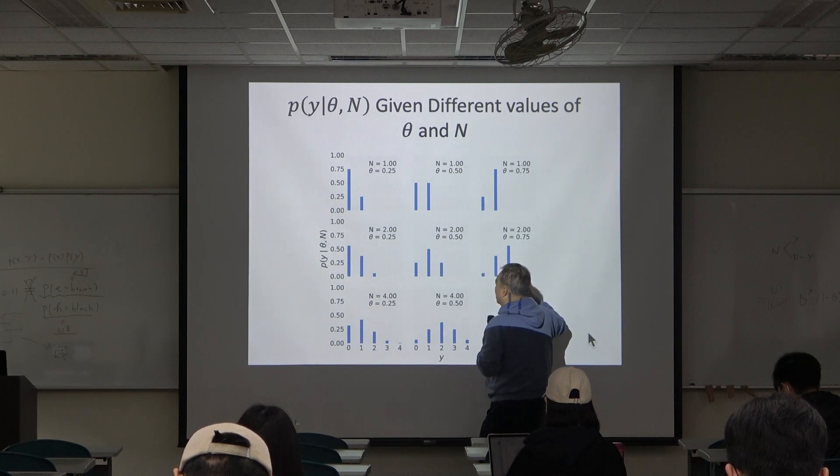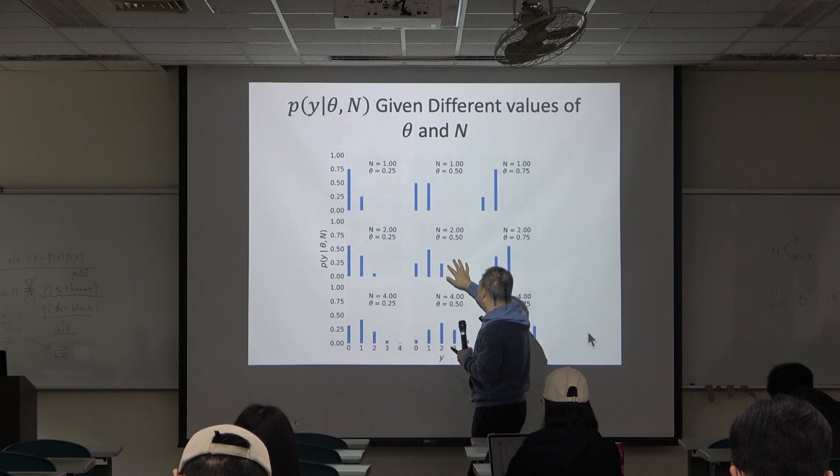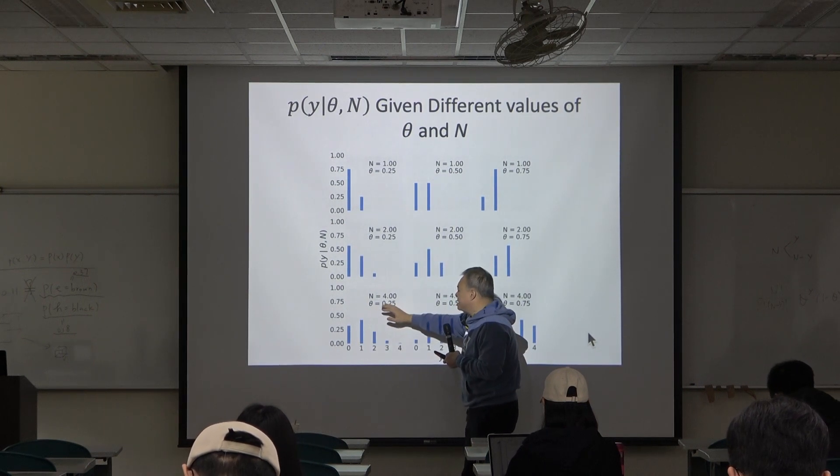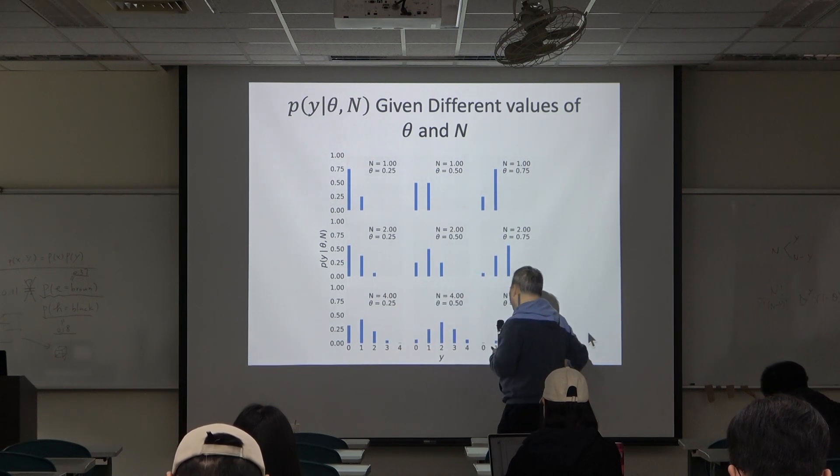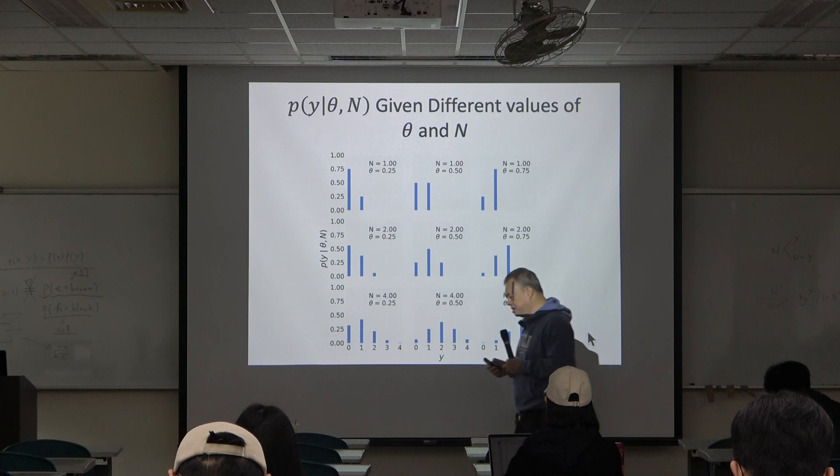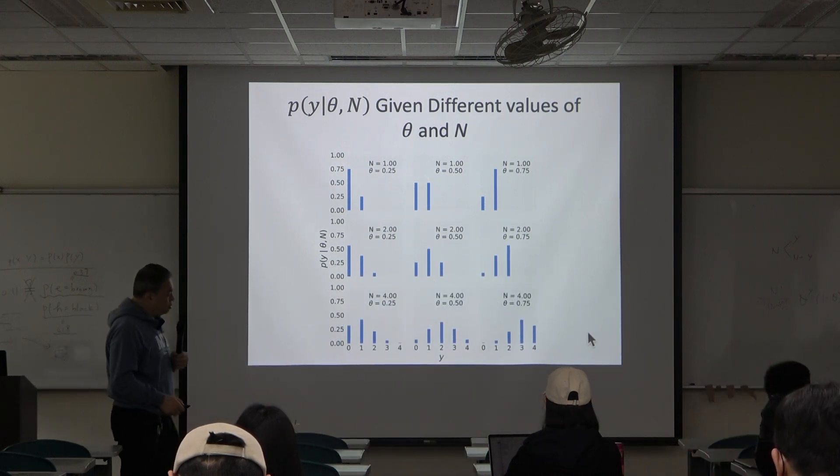Again, we use 0.25, 0.5, and 0.75. When n is 4, we have four possible cases for y. You can see here we give you some examples for this binomial distribution.